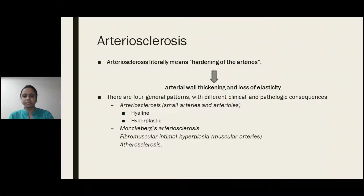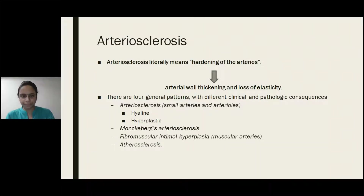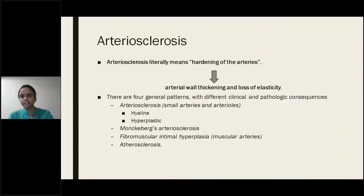Fibromuscular intimal hyperplasia involves the muscular arteries. And arteriosclerosis — here small arteries and arterioles are involved. There are two varieties: hyaline and hyperplastic. The most common condition that causes arteriosclerosis is hypertension.